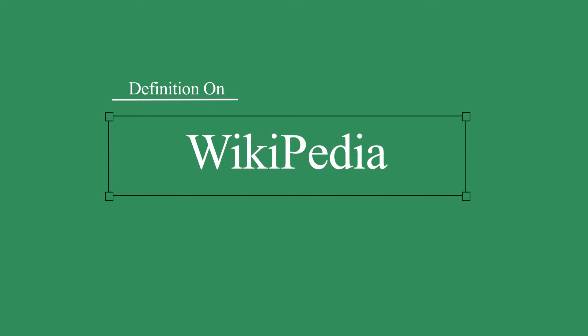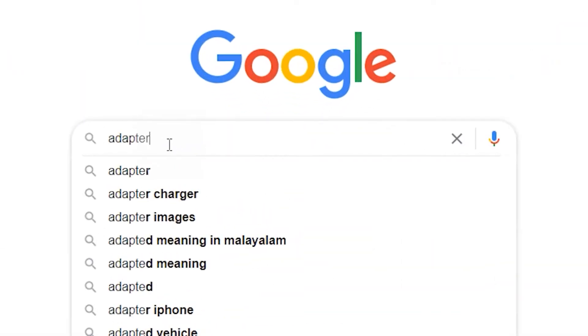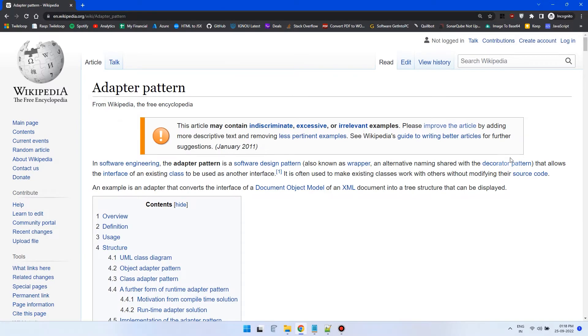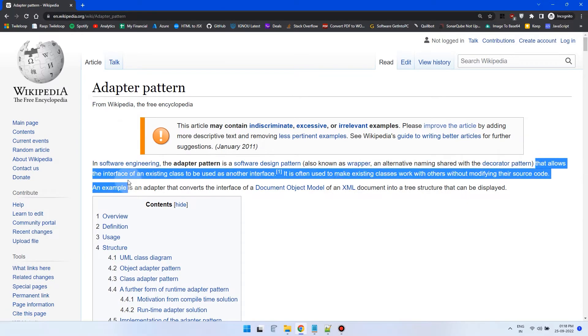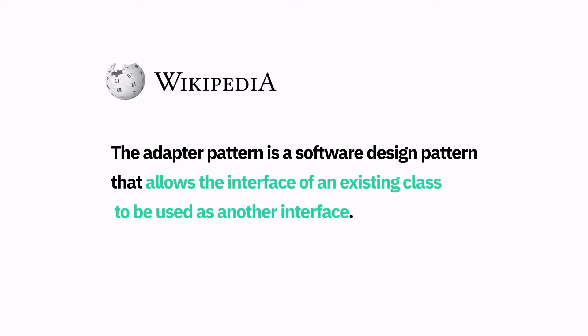First, let's see how Wikipedia defines the adapter design pattern and check if the description is understandable. Wikipedia says: the adapter pattern is a software design pattern that allows the interface of an existing class to be used as another interface.